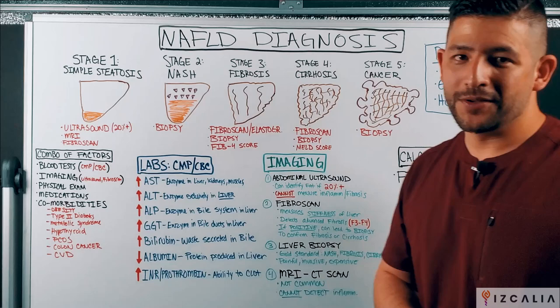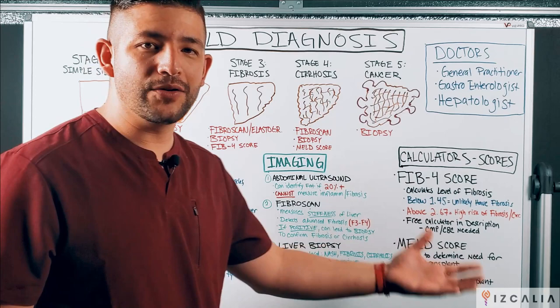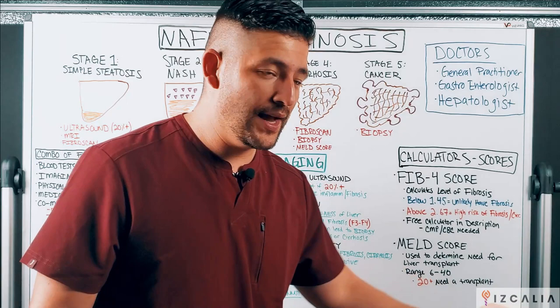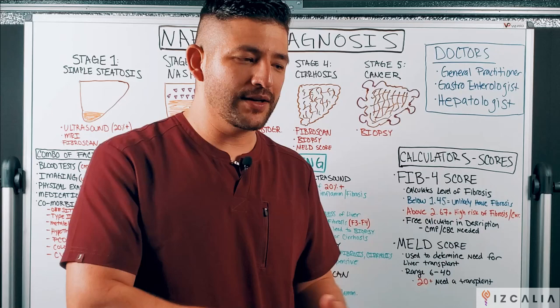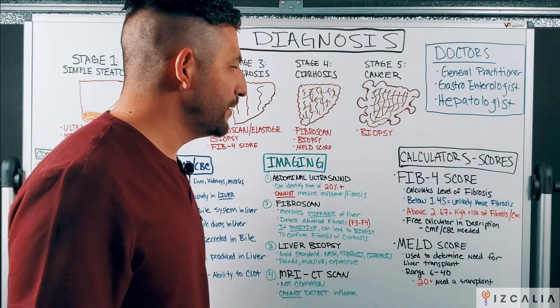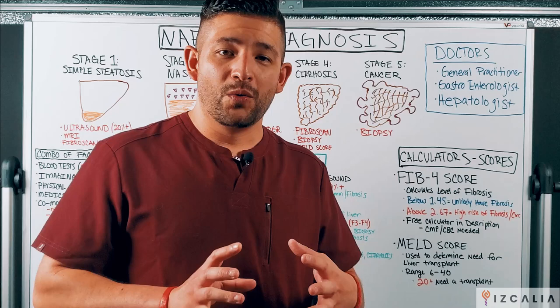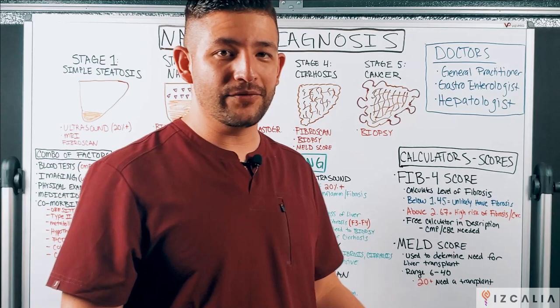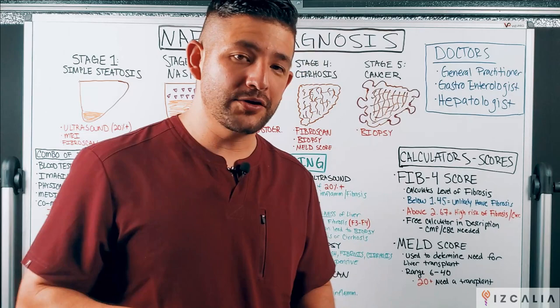The last thing I want to talk about is the use of calculators — different calculating tools to determine what level of fibrosis you might be at. The most common is the FIB4 score, a fairly complex mathematical formula where you take some of your lab values like AST and ALT, plug them into the equation, and it spits out a specific score that determines what level of fibrosis you're at. To save you the trouble of doing the calculation yourself, I'm going to include a free tool in this module where you can just plug in the information and it'll spit out your score.